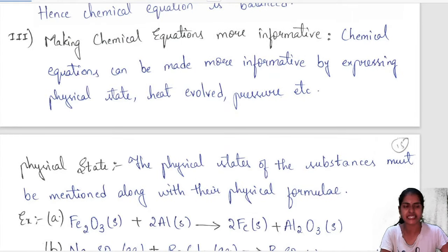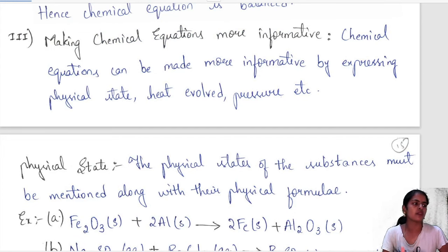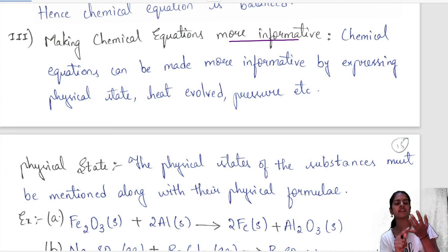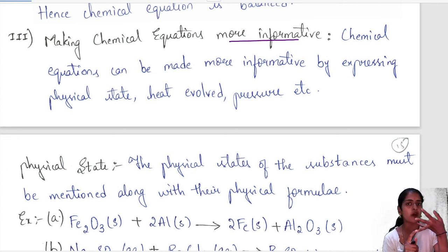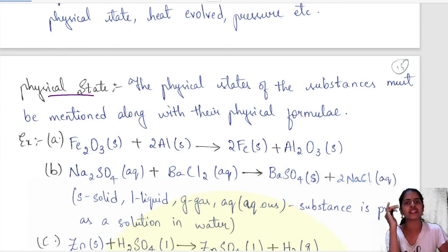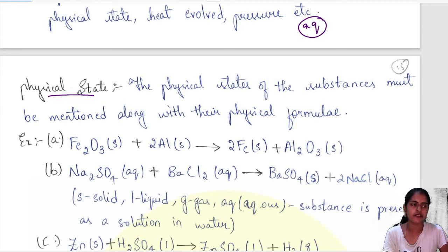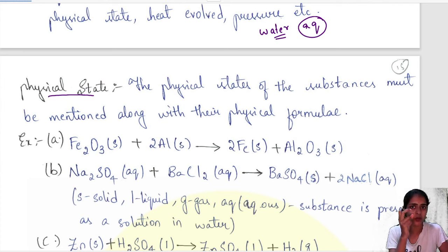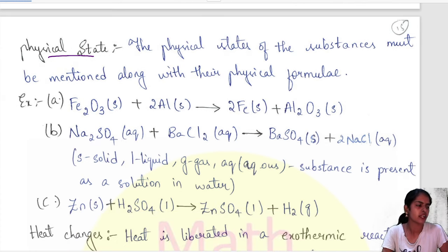Now, what information do chemical equations give you? First, we learned what a chemical equation is; then how to balance it. Now we learn what information it gives. Chemical equations will give you information regarding the physical state. There are three states — solid, liquid, gas — and also aqueous state. Aqueous state means AQ. Aqua means water — if you mix any chemical in water, it is said to be in aqueous state.